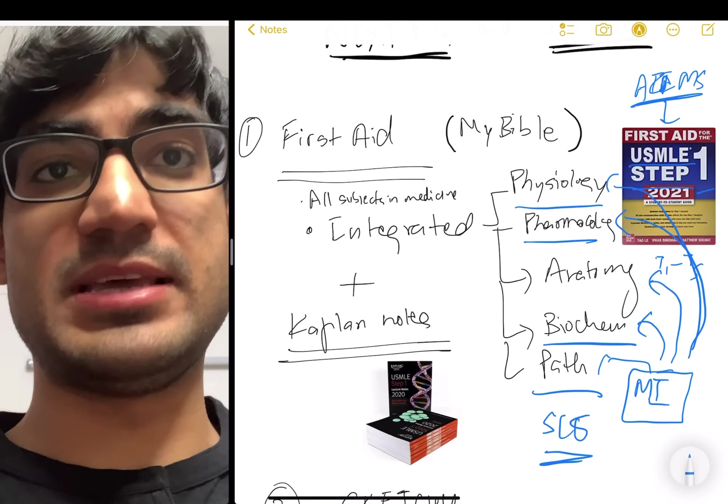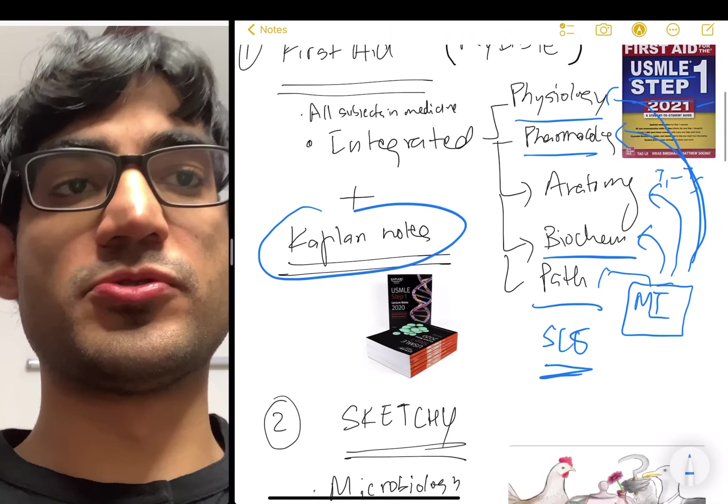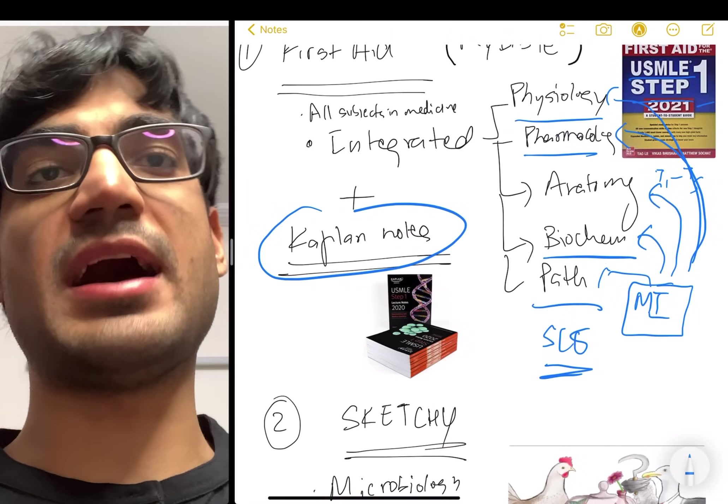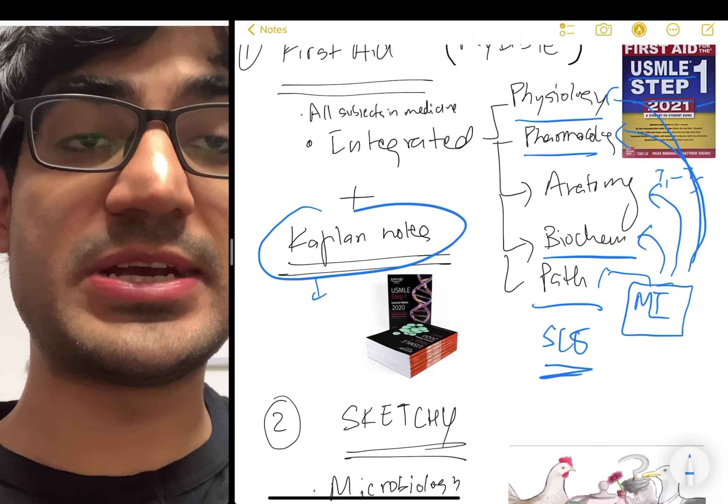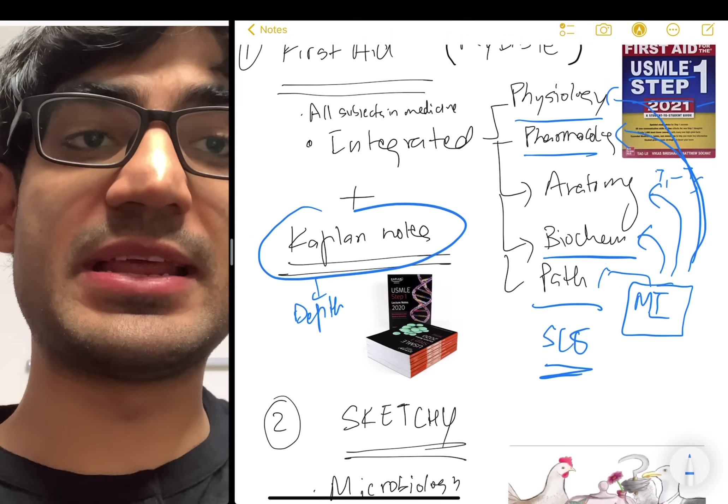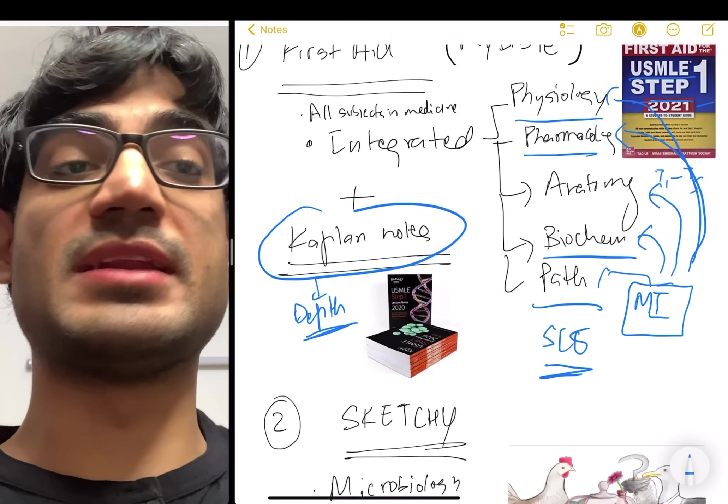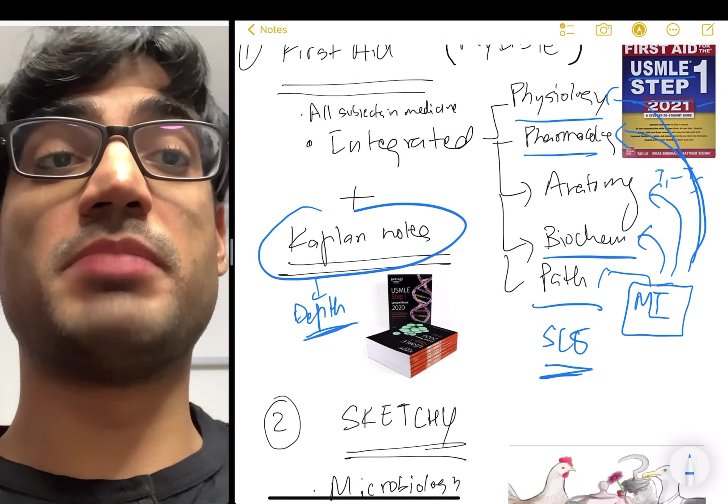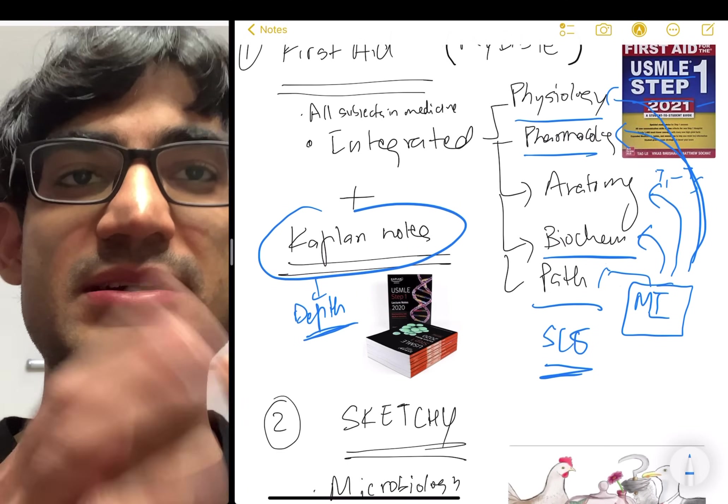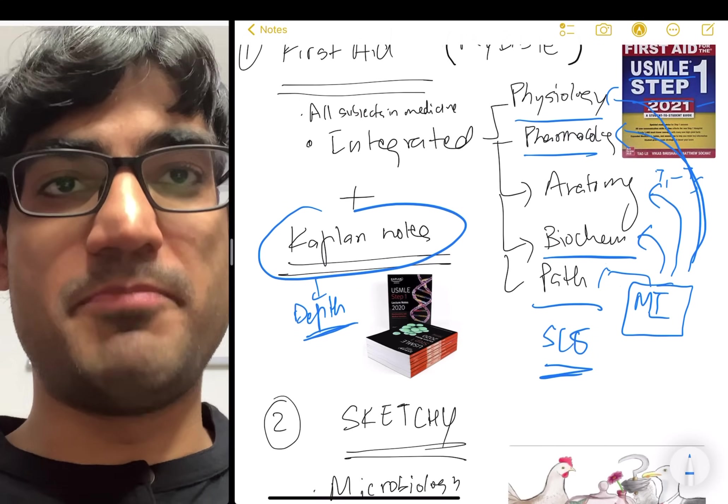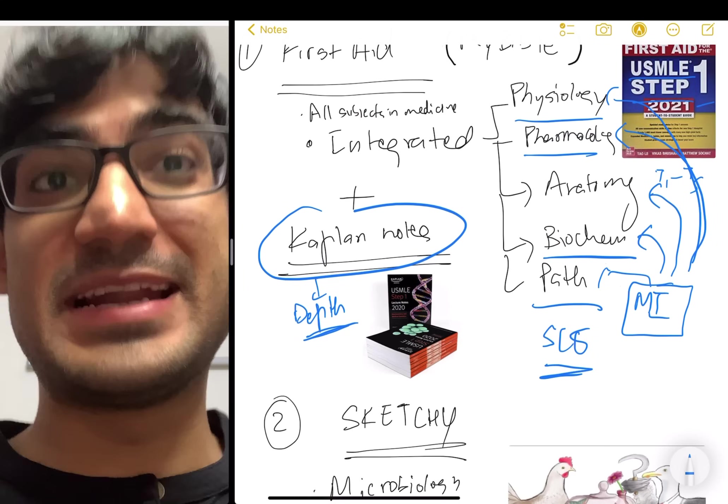The second thing I would recommend is Kaplan Notes and Kaplan Notes are beautiful because I have never seen any other resource go into the depth of a subject as much as Kaplan Notes. If you can get the videos that's great. But what happens is Marrow and Prep Ladder, they are great, but they just take you through the width of medicine. They don't really take you throughout the depth of medicine.